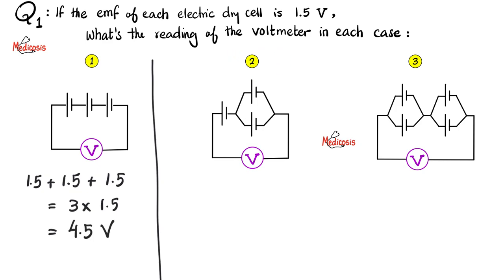Next, case number 2. Well, the first one is easy, that's 1.5, and then it's connected in series to this entire thing, so I'm gonna say plus. And then since these two are connected in parallel, you only take one of them, which is 1.5, for a total voltage of 3 volts for this question.